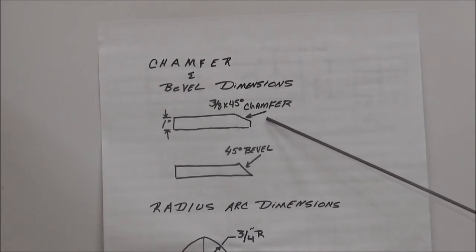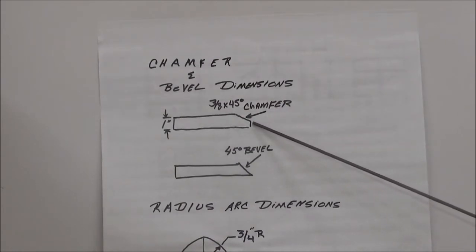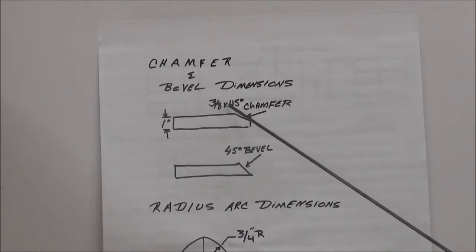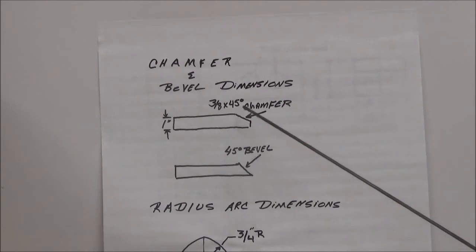So keep that in mind, you're going to have your chamfer 3/8 by 45 and then this may be dimensioned or may not. The reason why it may not be dimensioned is because if you follow this, this is going to happen anyhow. So it's not like we're trying to fit to the landing, we're trying to fit to the chamfer.